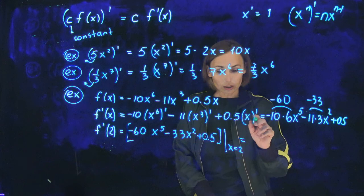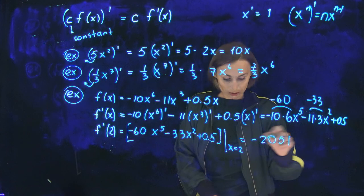this one is 32, this one is 4. The result will be negative 2051 plus 0.5. So it's going to be negative 2050.5.